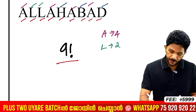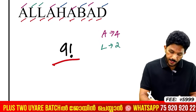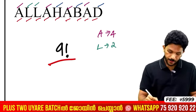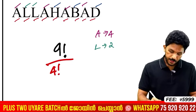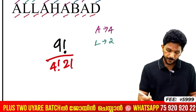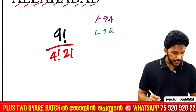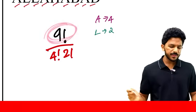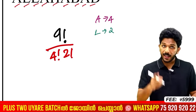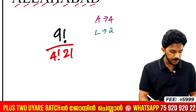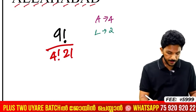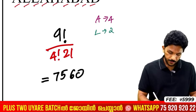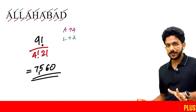Since A is 4 times and L is 2 times, we divide 9 factorial by 4 factorial and 2 factorial. So 9! ÷ (4! × 2!). In the calculator, 9 factorial gives 362,880, divided by 24 (4!) and 2 (2!). The answer is 7,560.